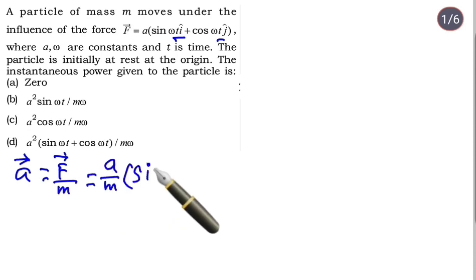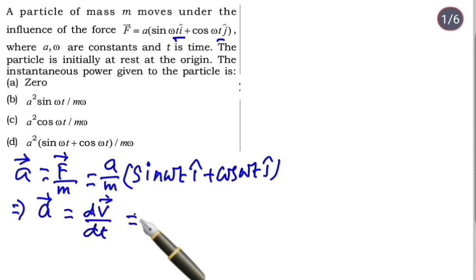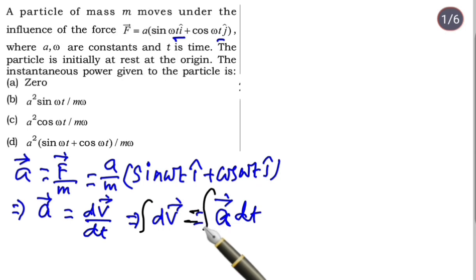And as we know, acceleration we can write as a vector equals dv by dt, dv vector by dt. From this we can write dv vector as a vector into dt. If we apply integration on both sides, we'll get velocity vector with some constant.